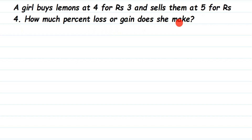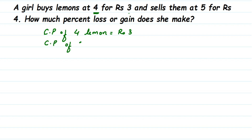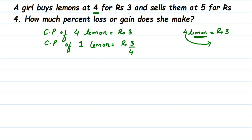To compare, we need to find the selling price and cost price of one lemon. 'Buys' means it's the cost price. She buys 4 lemons for 3 rupees, so the cost price of 4 lemons equals rupees 3. Therefore, the cost price of one lemon is 3 divided by 4, which is 3/4 rupees.